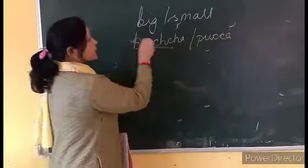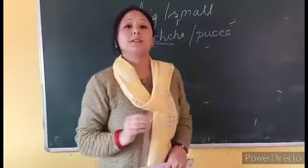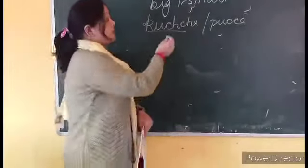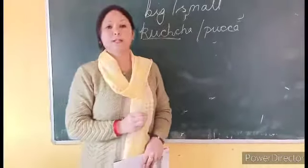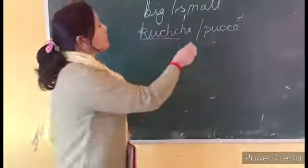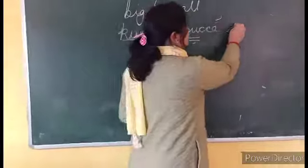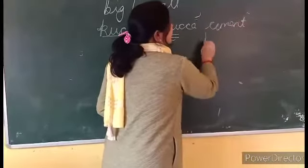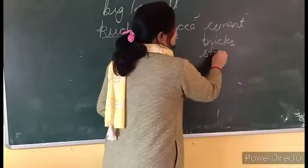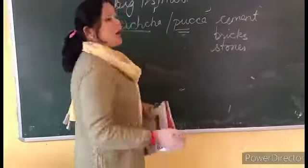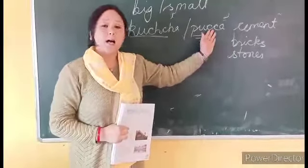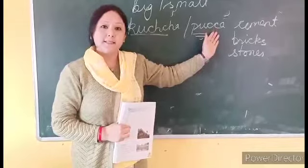What is a kacha house? A kacha house is a house that is made of mud, straw, and grass. Kacha houses are easy to build and you find this type of house in the villages. A paka house is made up of cement, bricks, and stones. Houses made of cement, bricks, and stones are called paka houses. You find this type of house in the cities and big towns.